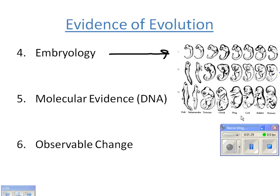Comparative embryology looks at how organisms develop over time. This picture shows a bunch of different kinds — fish on the left, humans on the right — all vertebrates with a backbone. At very early stages of development, all the organisms look very similar, and the patterns of development are also similar.